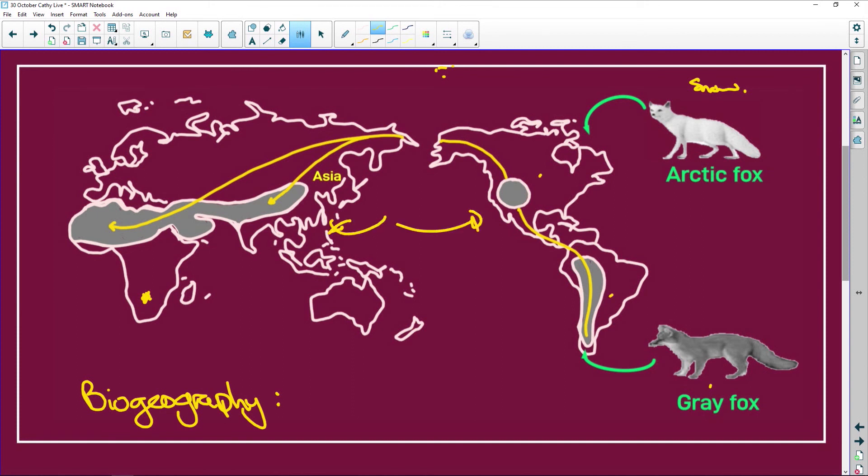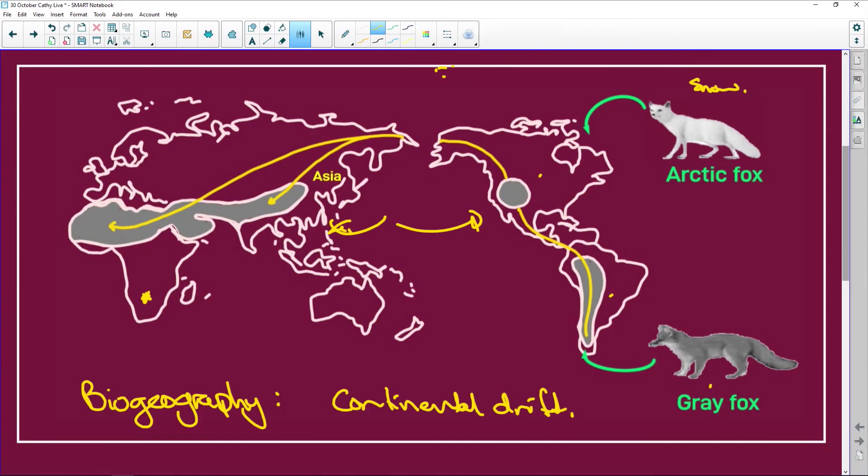Now if you get a question where they give you a diagram like this, whether it's camels, whether it is flightless birds, whether it is tortoises, whatever, it doesn't matter. The way I'm going to show you to answer the question, I'm going to make it apply to the foxes, but it can apply to any animal that they give you.